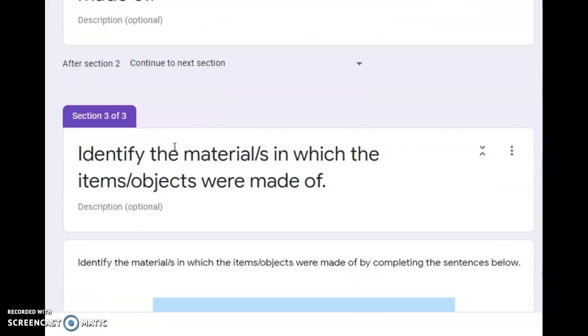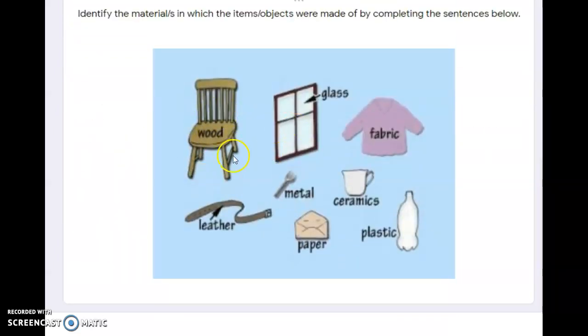In this activity or worksheet or test, you are going to look at the picture. This one is only an example, so obviously you will see the names of the materials, but in the actual test you will only see the picture. You are going to determine or identify what materials are used to make that particular object.